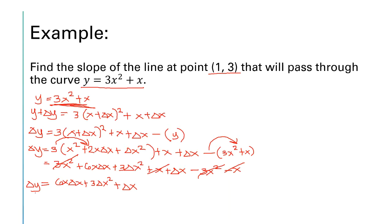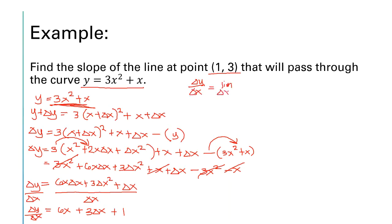The next step is to divide both sides by delta x. So 6x·delta x / delta x = 6x, 3·delta x² / delta x = 3·delta x, and delta x / delta x = 1. Then applying the limit as delta x approaches 0, the 3·delta x term becomes 0, leaving delta y over delta x = 6x + 1. This is our derivative.